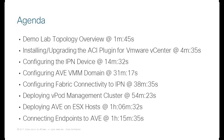Next, we'll configure the ACI fabric to connect to the IPN device, followed by deploying your vPod management cluster, which consists of a pair of virtual spines and virtual leaves on ESX bare metal. Then we'll deploy the AVE on our ESX hosts that are going to have all of our endpoints running on them, and lastly we'll connect our endpoints to the AVE.